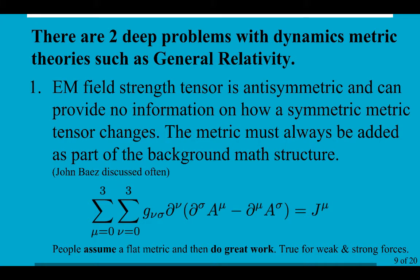I think there's actually two deep problems with dynamic metric theories, such as general relativity. And one of them is that for something like EM that has this anti-symmetric field strength tensor, it can't provide you any information about that symmetric metric changing. And therefore, you must supply a metric as part of the background mathematical structure. And in news group days, Professor John Baez used to always emphasize that that was a really important shortcoming. Just assume it's flat and you can do great work. That's true for the weak force. That's true for the strong force.